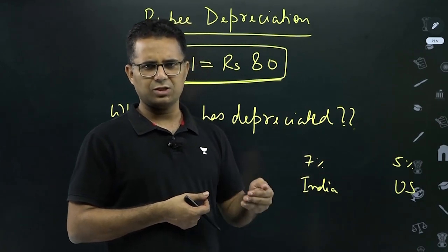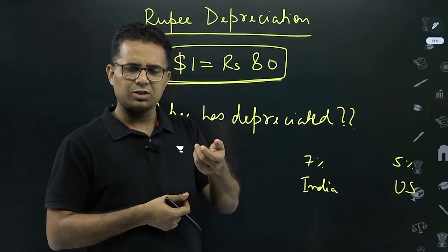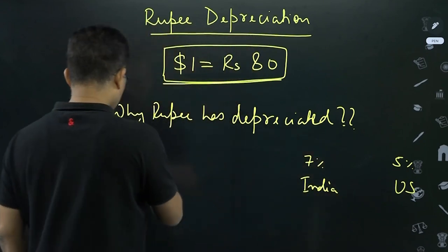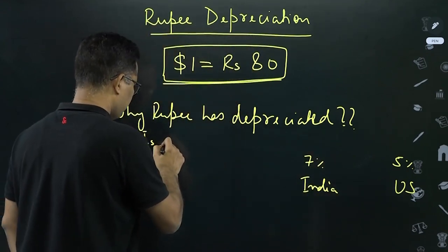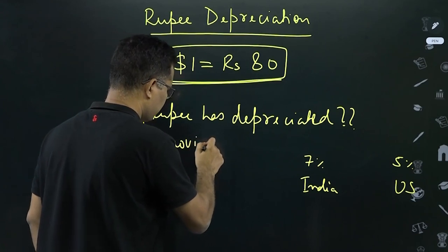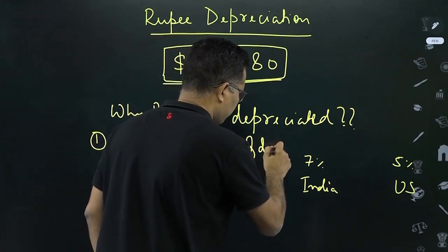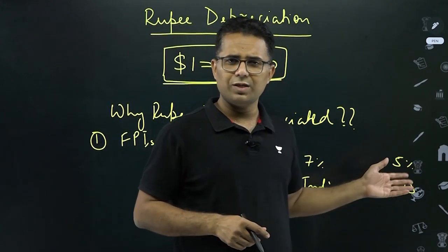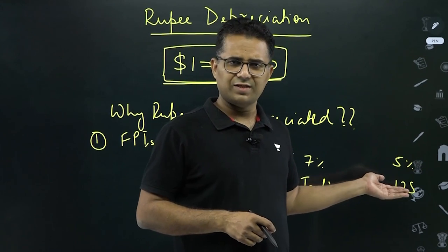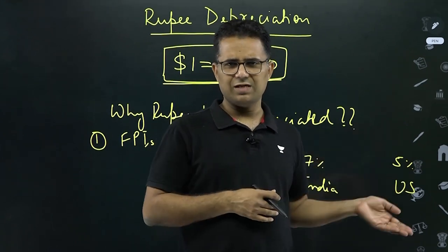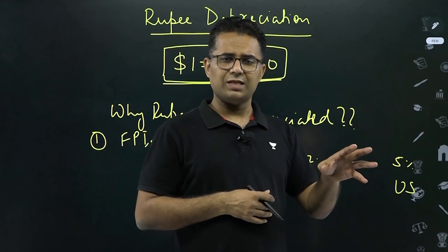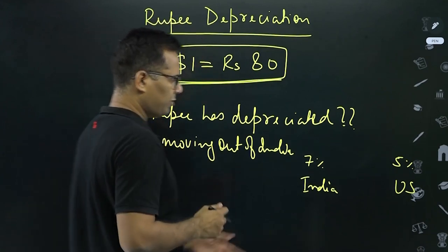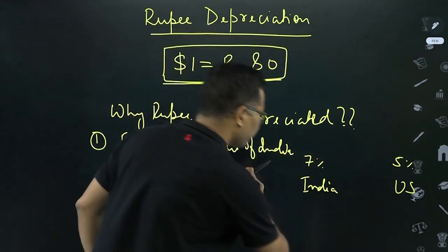When FPI is moving out of India, they sell their investment in India, get rupees, sell rupee in the forex market, demand dollars — dollar starts appreciating, rupee starts depreciating. US interest rate is increasing because US inflation is around 8-9 percent, which is the highest in the last 40 years. That is why the US Federal Bank is increasing the interest rate.